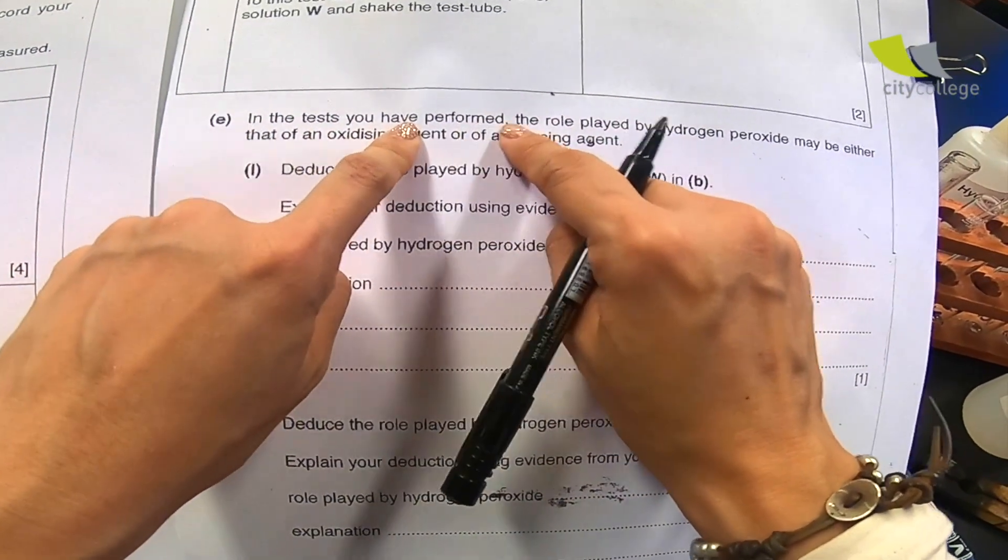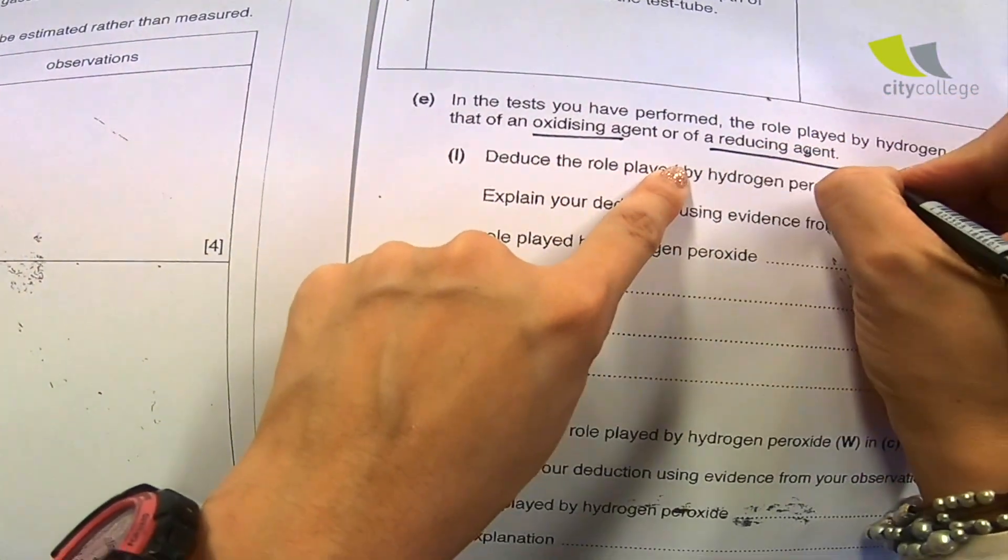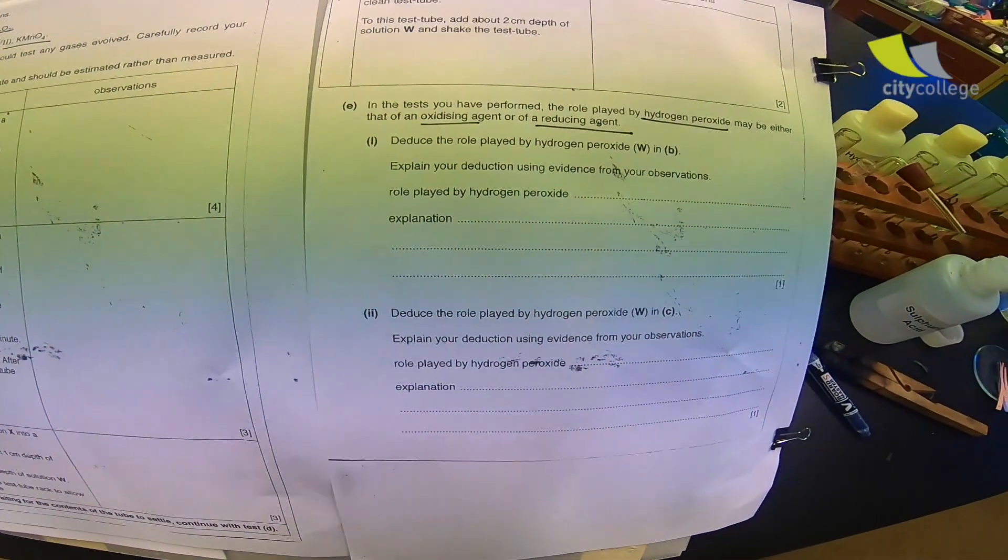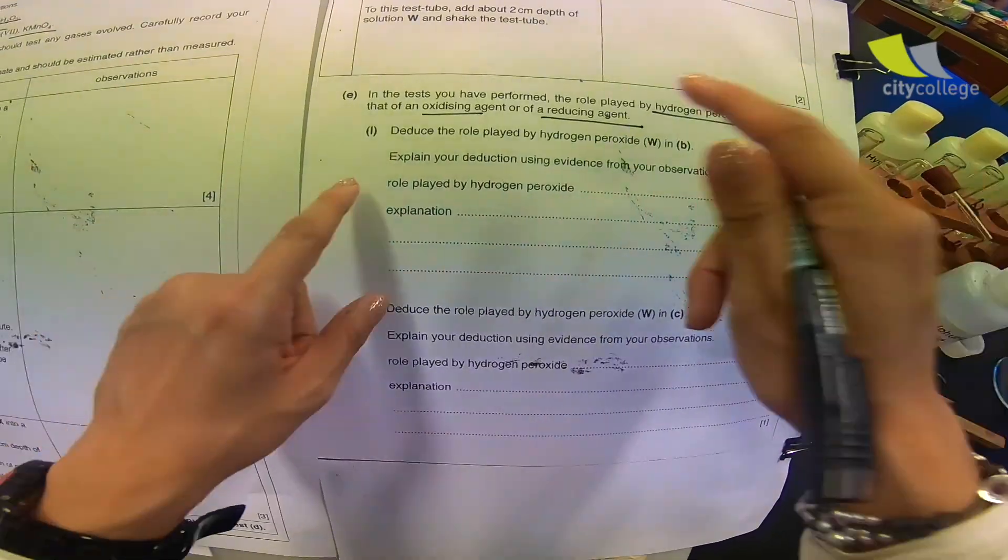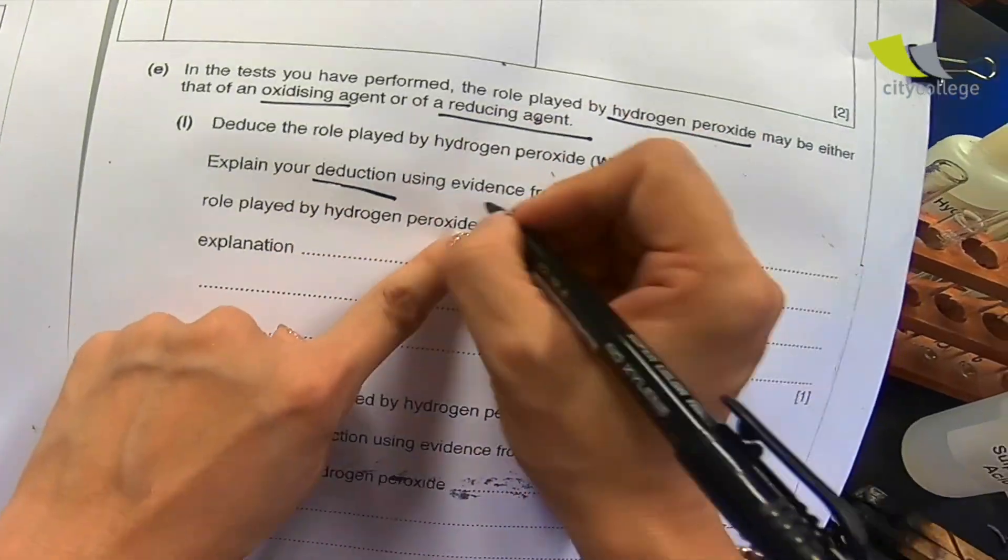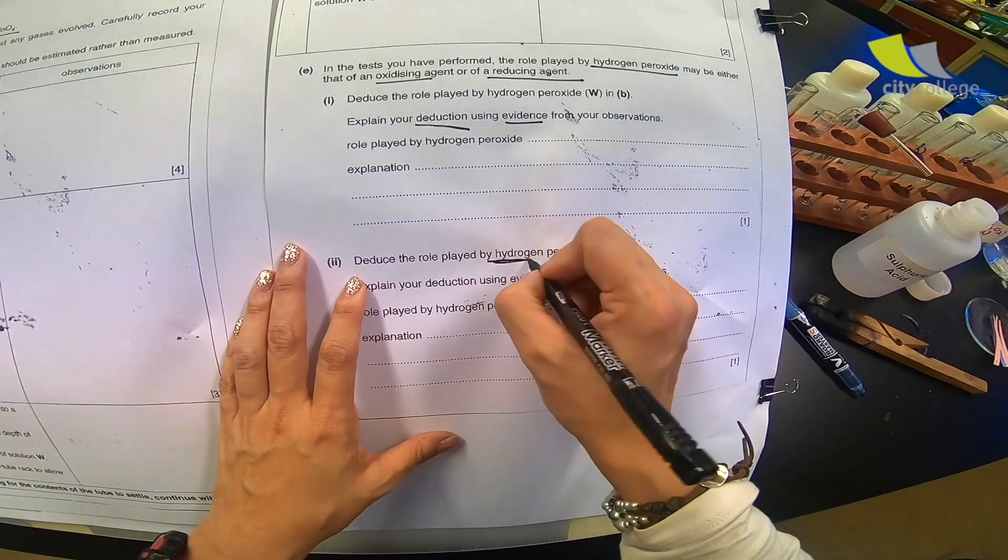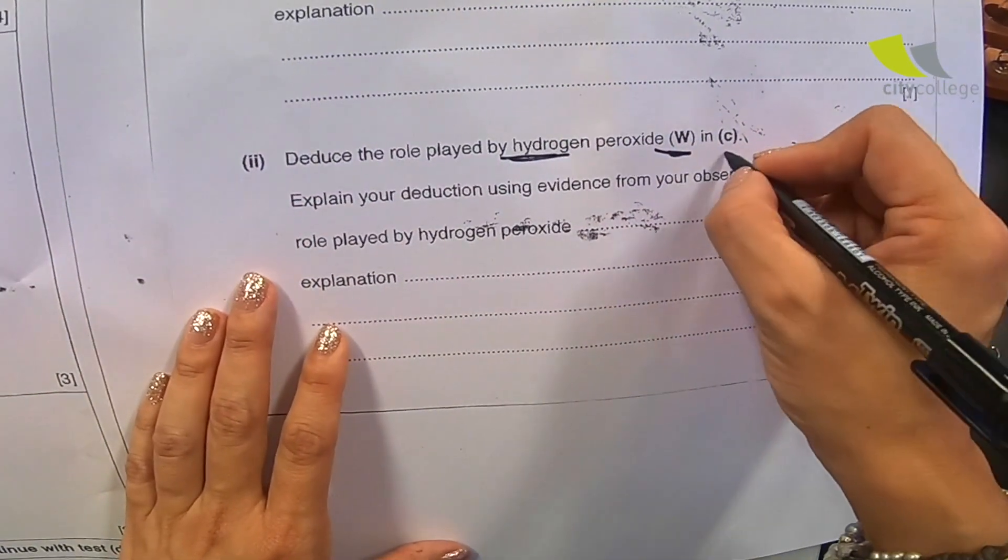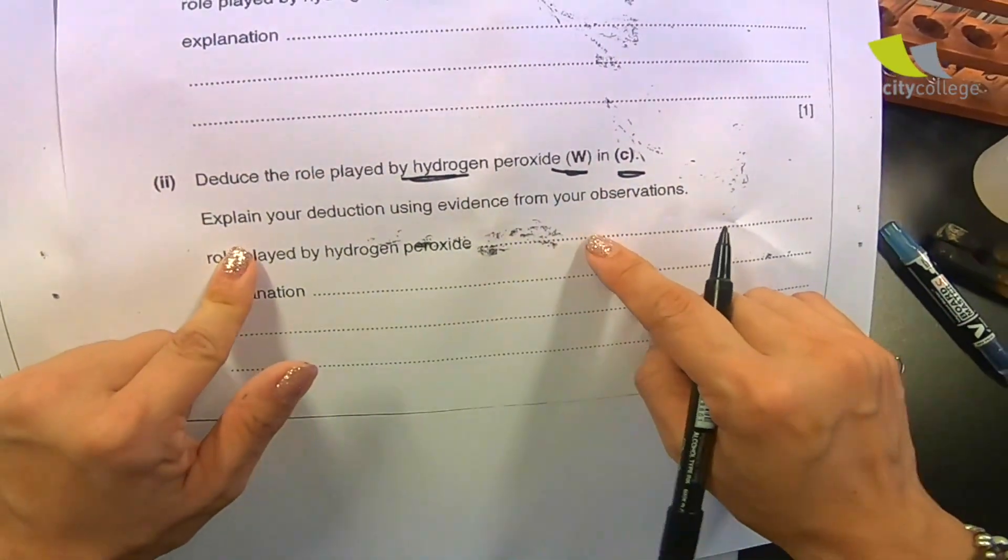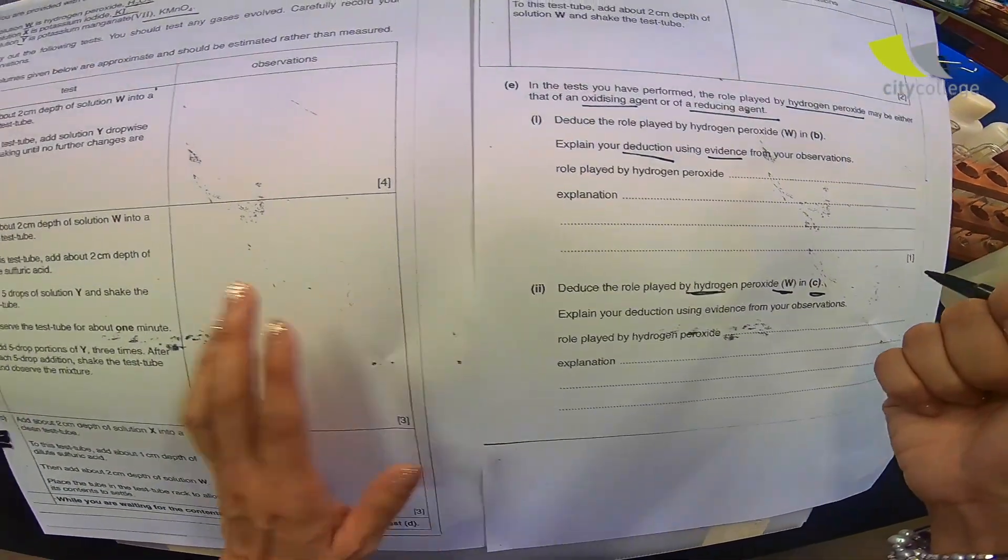Let's read part E. In the test, you have performed the role played by hydrogen peroxide may be either that of an oxidizing or reducing agent. Ah, so which means that this hydrogen peroxide, our job is to find out what role they are trying to play. So that is what we are going to do. Deduce the role played by hydrogen peroxide W in B. And explain our deduction using the evidence from what we have done in part B. And then it goes on to find the role played by hydrogen peroxide W in part C. Of course, to explain the deduction and use the evidence to prove the role.